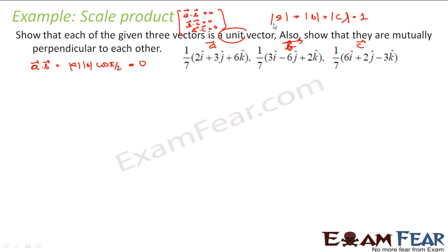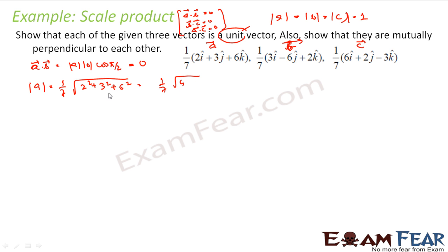First, magnitude of A, magnitude of B, and magnitude of C are all 1 because they are unit vectors. Second, A dot B is 0, B dot C is 0, and A dot C is 0. So let us prove the first part: magnitude of A is 1 by 7 times root of 2 squared plus 3 squared plus 6 squared, that is 1 by 7 times root of 4 plus 9 plus 36, which is 1 by 7 times root 49, that is 1 by 7 into 7 equals 1. Thus vector A is a unit vector.